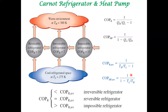Extending similar arguments that we saw for heat engines, you can have three kinds of refrigerators. If your coefficient of performance is less than that of a reversible refrigerator, you have an irreversible refrigerator. If your coefficient of performance is claimed to be greater than that of a reversible refrigerator, you have an impossible refrigerator. This similar classification was also seen in the case of heat engines. With this, we complete this topic.